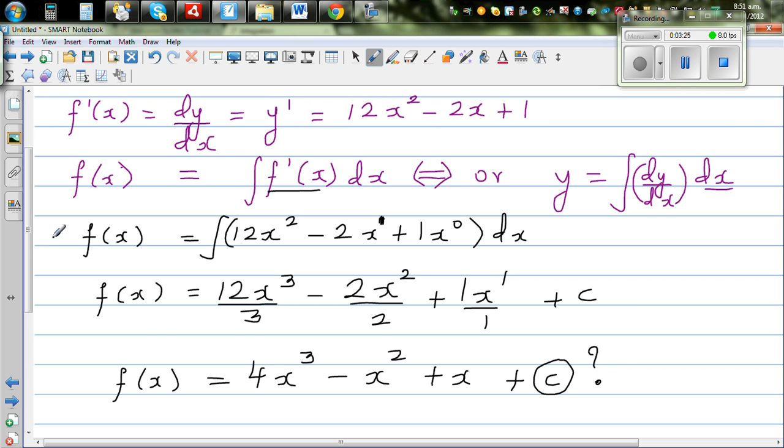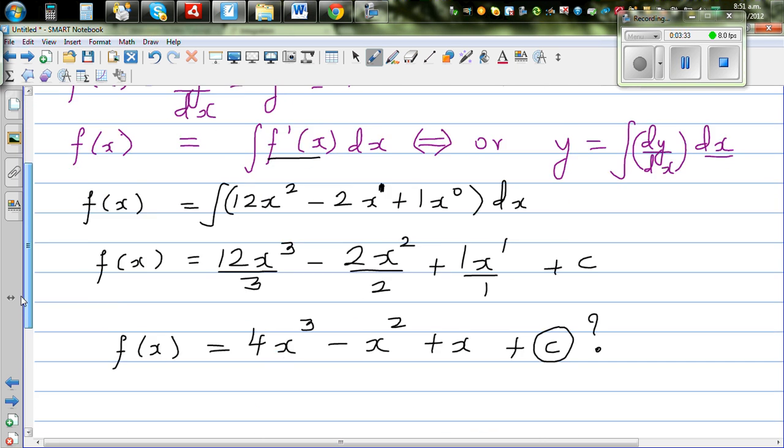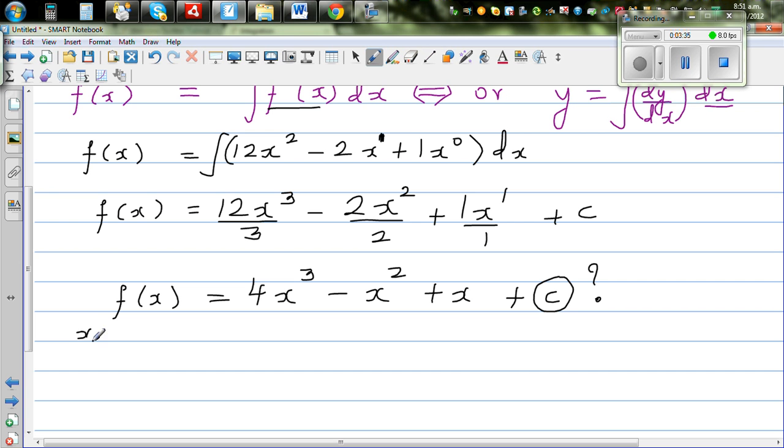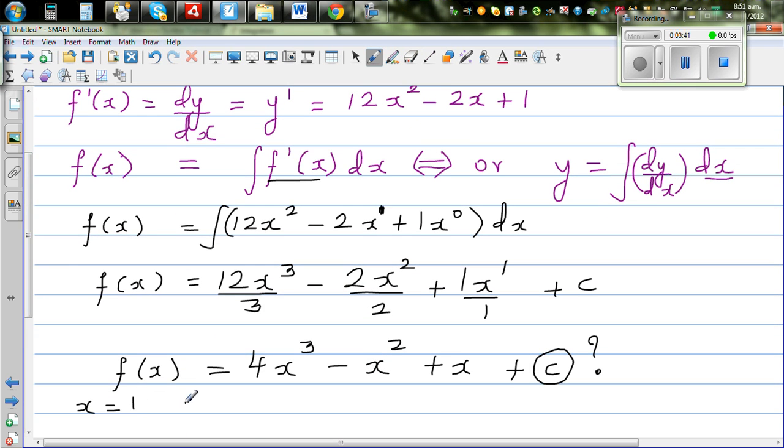The next step is to find c, for which we need one point. So this is a point that is given. Let me explain this in notation. So here we are saying when x is 1, y is 3.